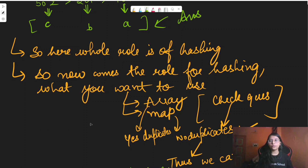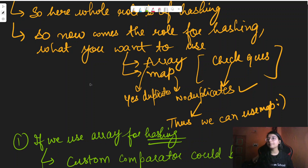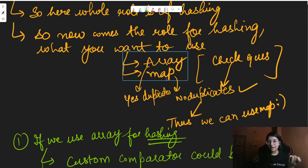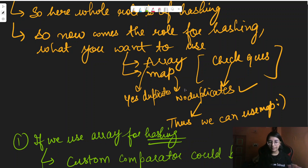For hashing, we need a data structure to store the mapping. We can use either an array or a map. If duplicates are allowed, we'd use an array since maps do not allow duplicate keys. However, the constraint explicitly states all height values are distinct, so we can safely use a map in this question.